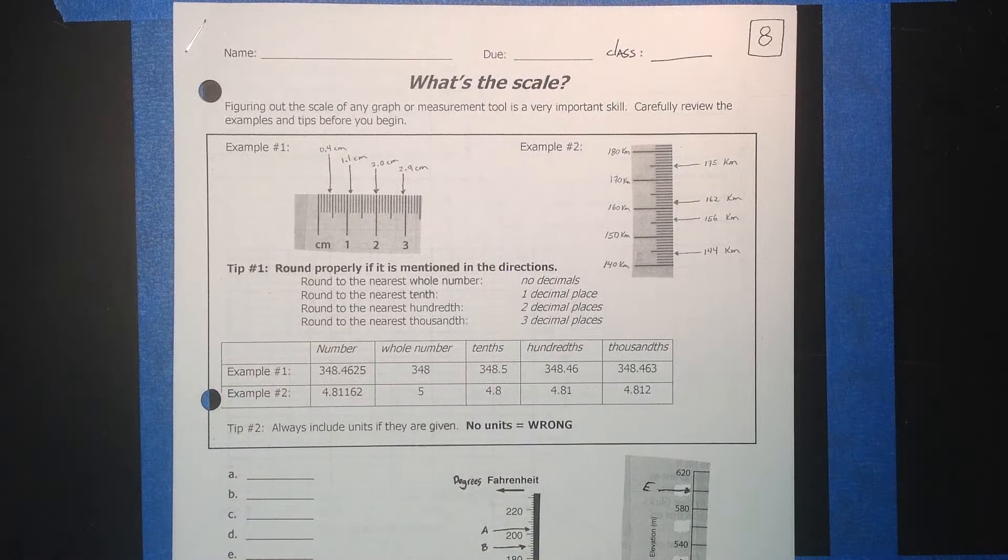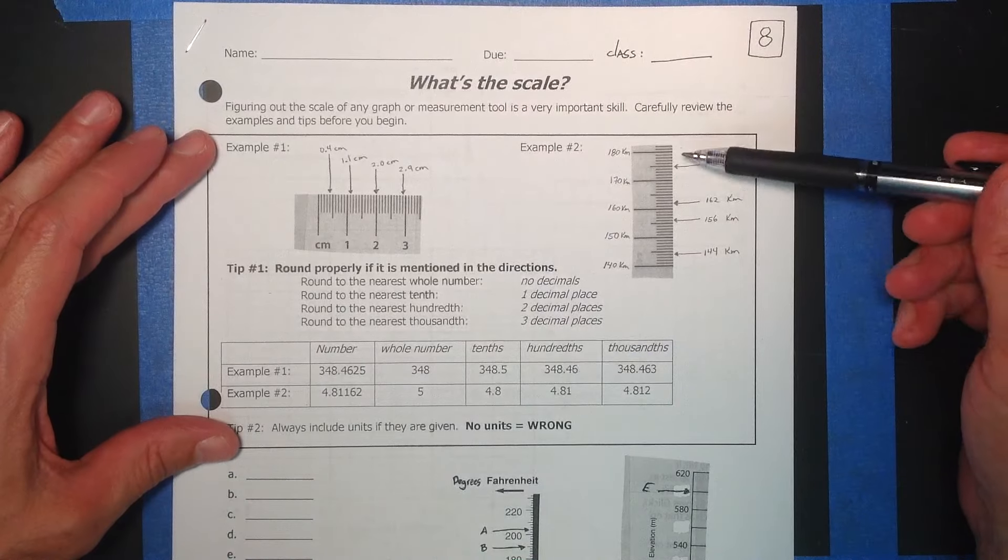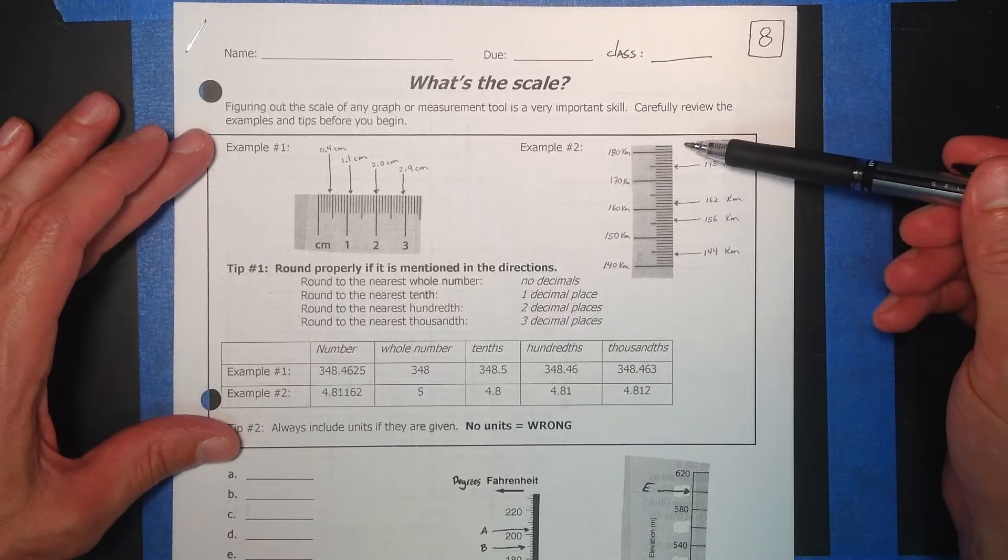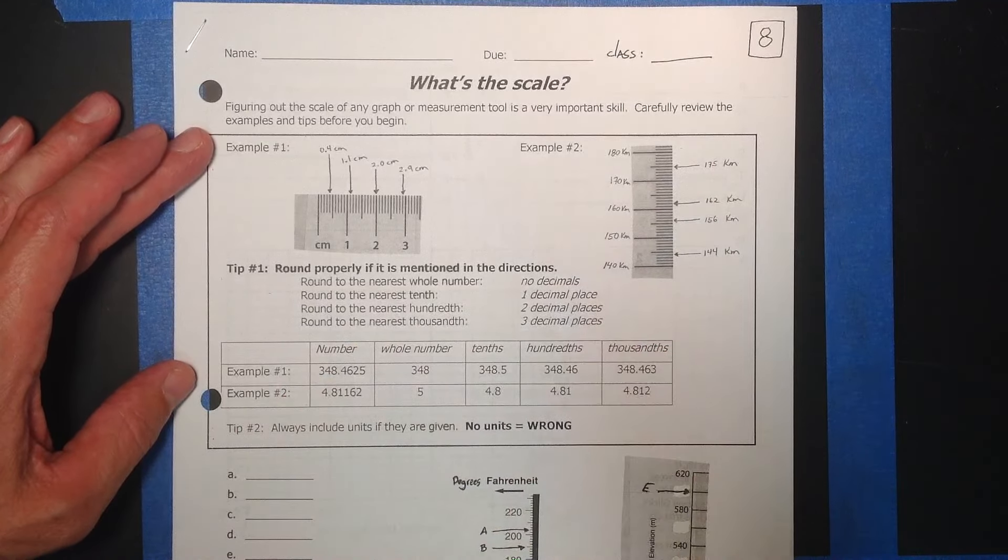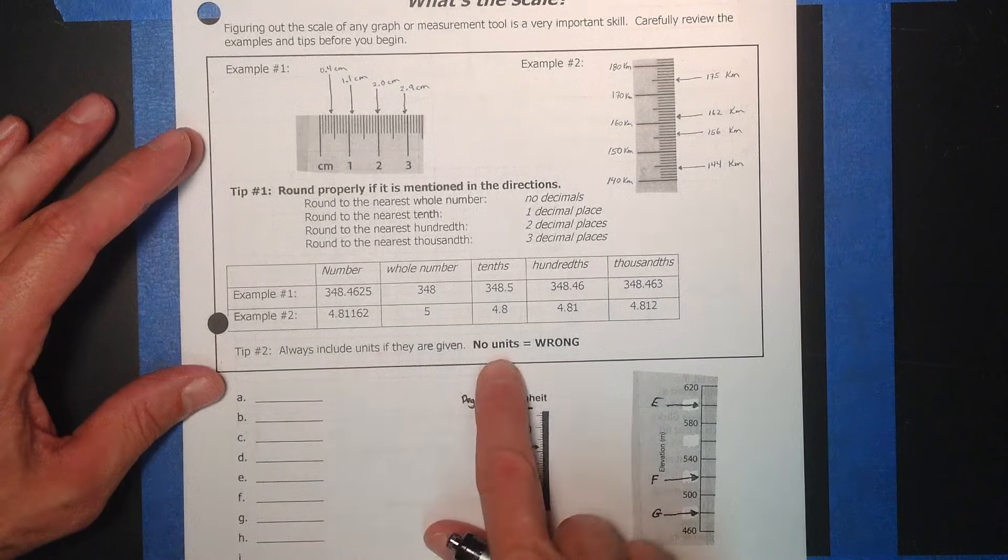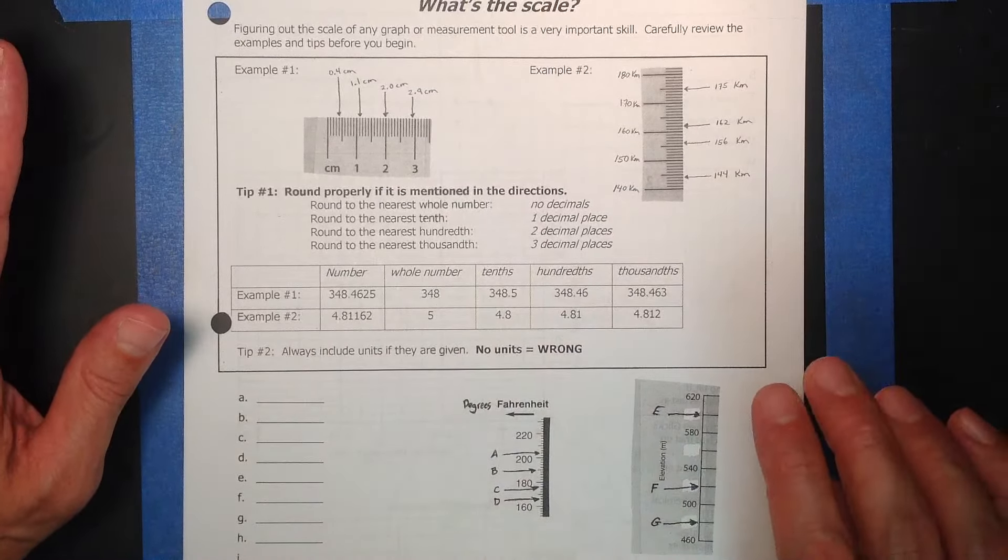Mr. Gasta here, homework eight. What's the scale? Some of this is review. Please make sure on your own that you go through all of this. It's very clearly presented. There are good examples here and then the rounding is important. And key thing, no units equals wrong. That is very important. Must have units on all of this.